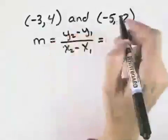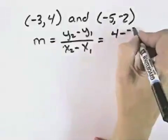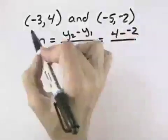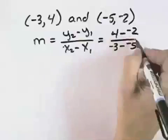So if I chose 4 as my first y value, then I'd have 4 minus a negative 2. And for x, I'd need to start with the negative 3 as my first x value and subtract the negative 5 from that.